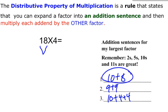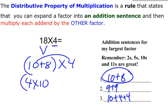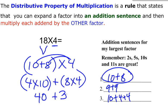So if you have 10 plus 8, 10 plus 8 is the 18. And they need to multiply each of the addends by the 4 because it's still 18 times 4. So 4 times 10 plus the 8 times 4. 4 times 10 is 40 plus 8 times 4, which is 32. And then they add 40 plus 32, which is 72. So your product is 72.